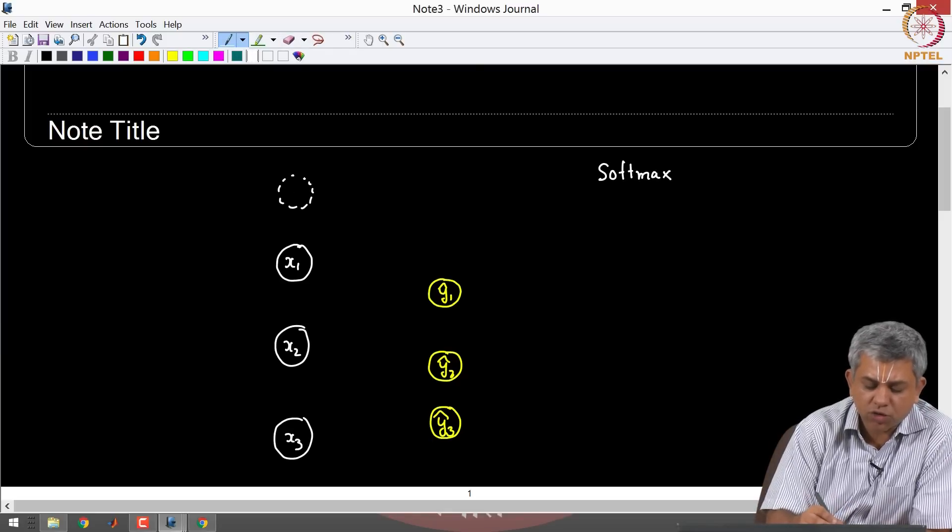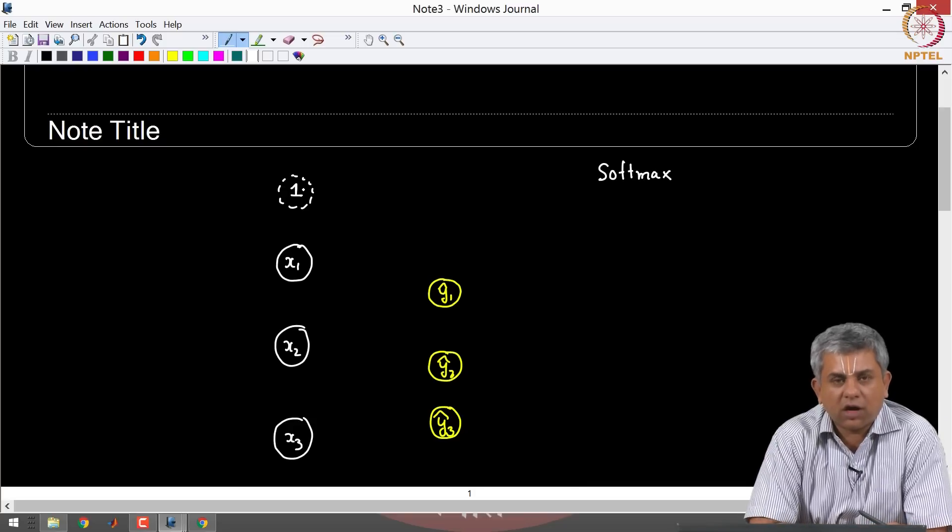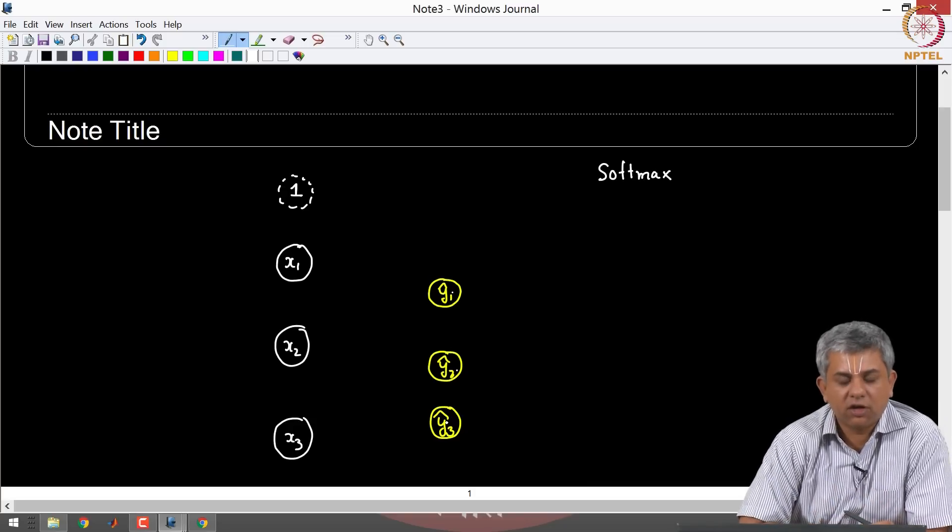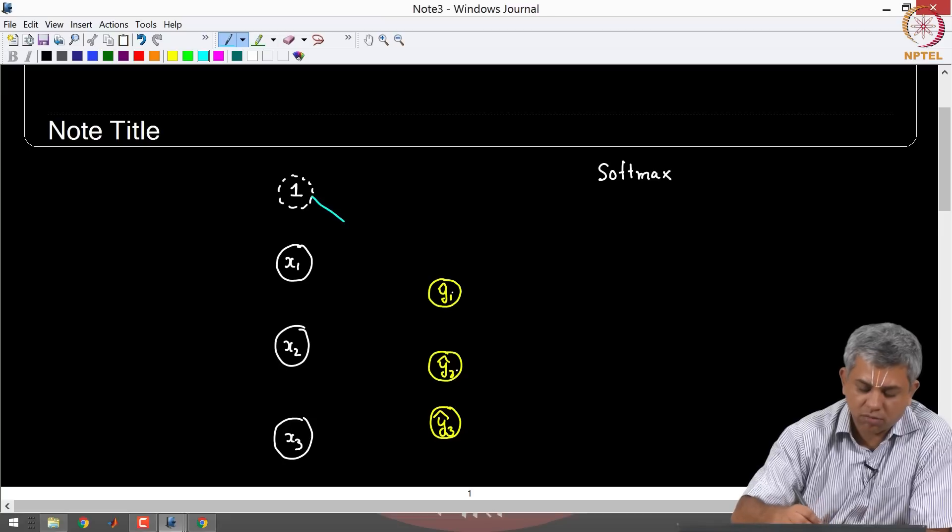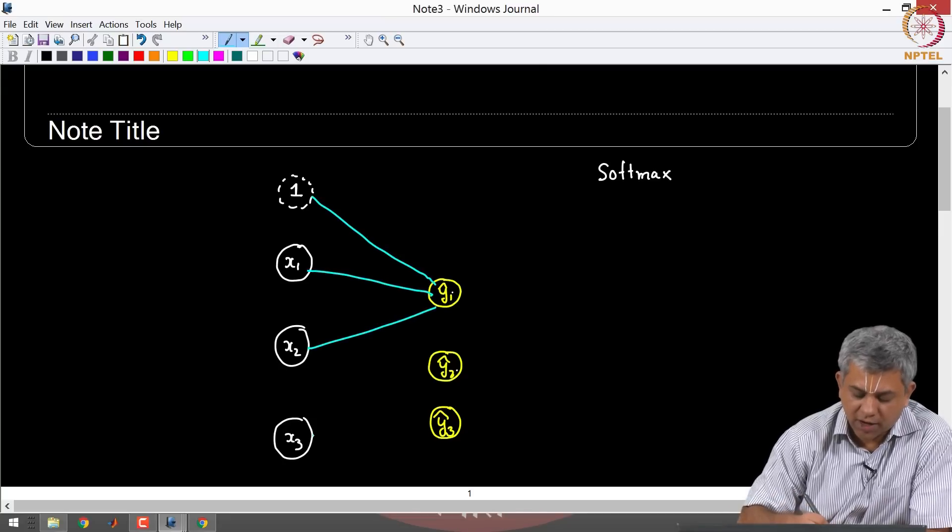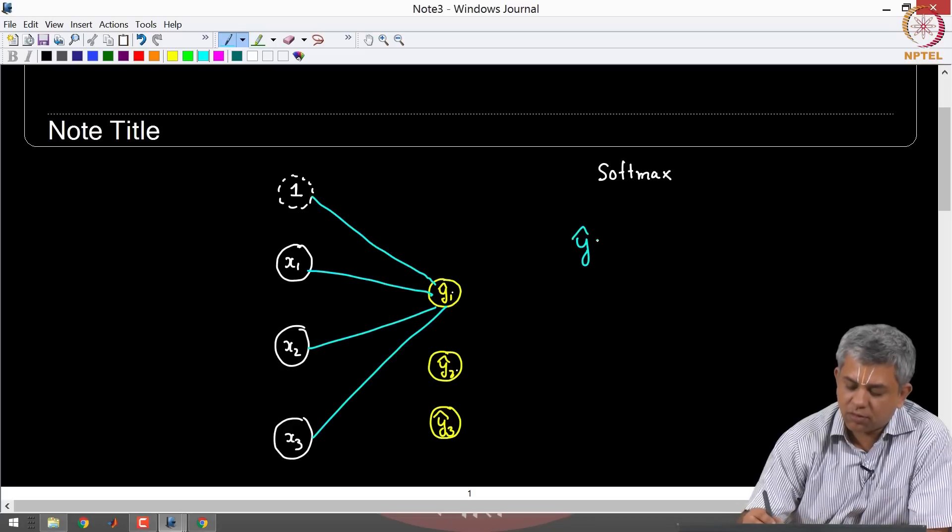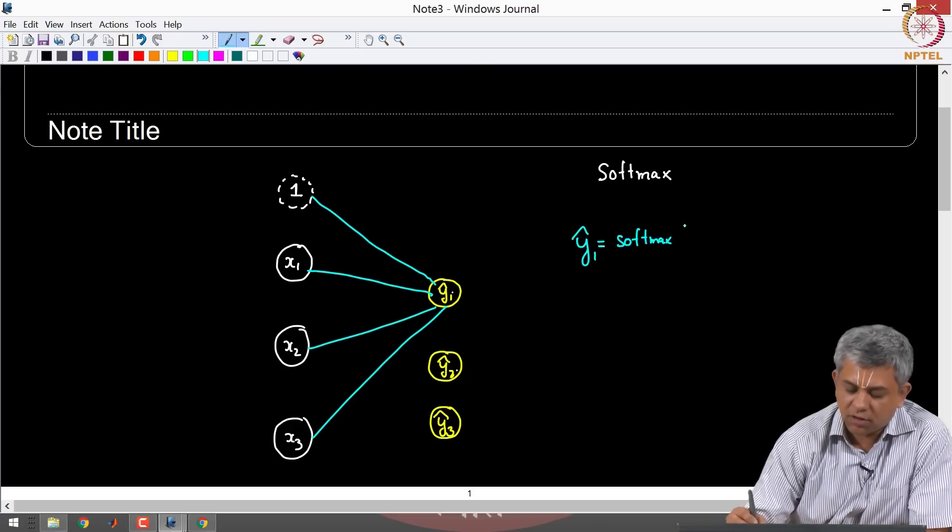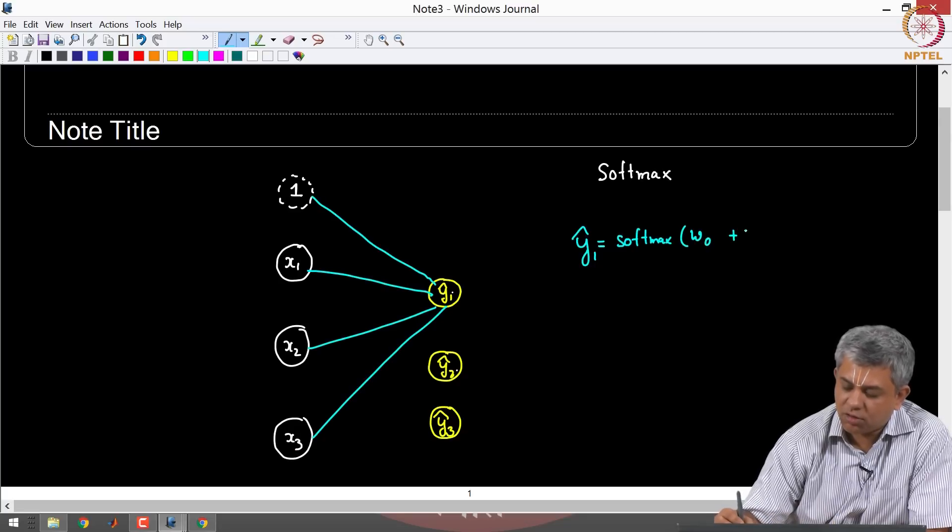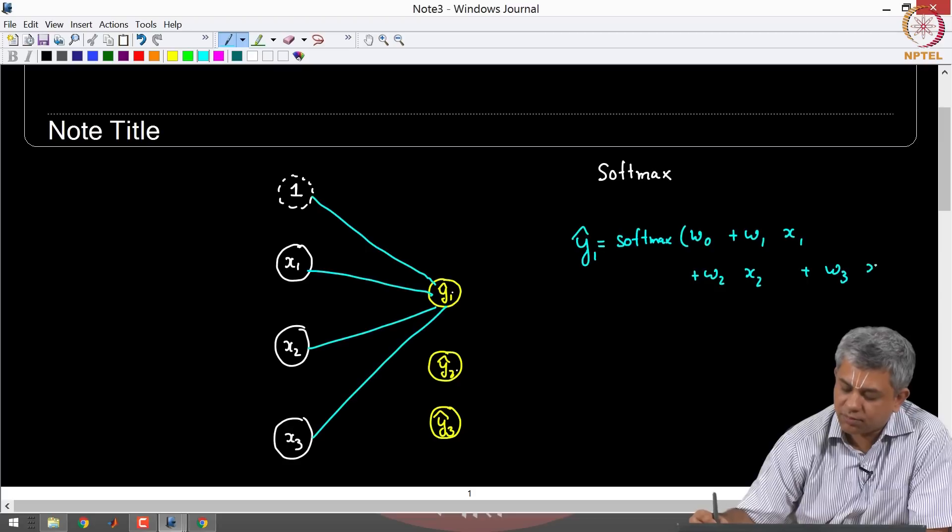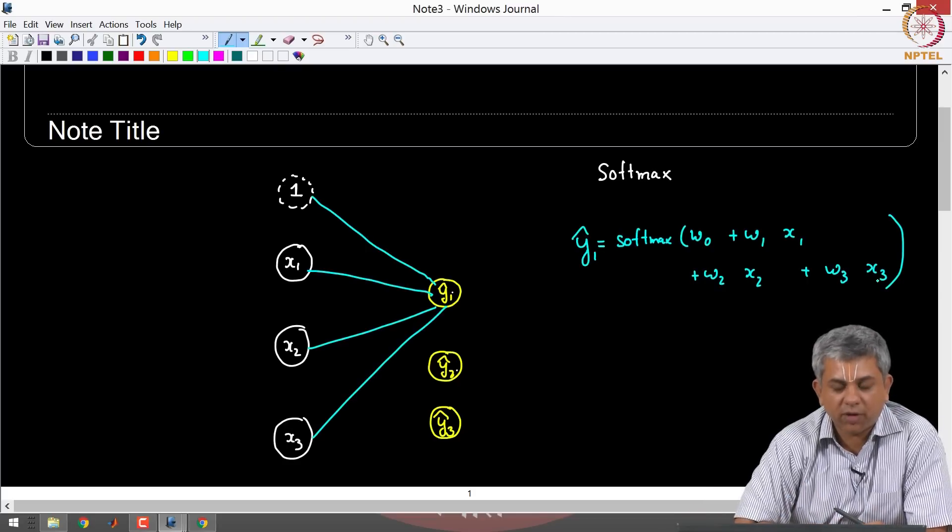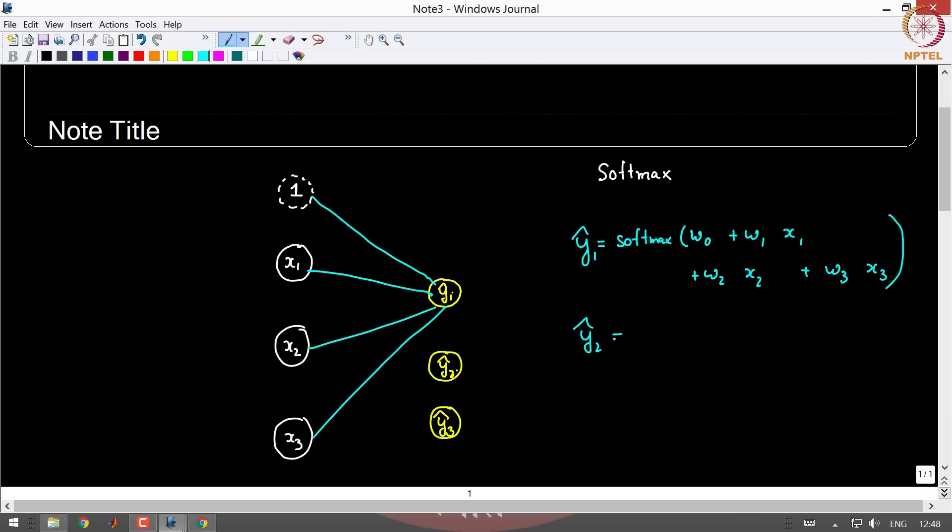And now let us introduce our usual bias unit which is one or X0, and now we want to find out what is Y1 hat, Y2 hat, Y3 hat. So the portion that we are doing right now is the forward model. So as usual, Y1 hat is equal to softmax of the linear combinations: W0 plus W1 X1 plus W2 X2 plus W3 X3. That would be Y1 hat. Now suppose I have Y2 hat. Y2 hat is also softmax of some linear combination W0 plus W1 X1 plus W2 X2 plus W3 X3.